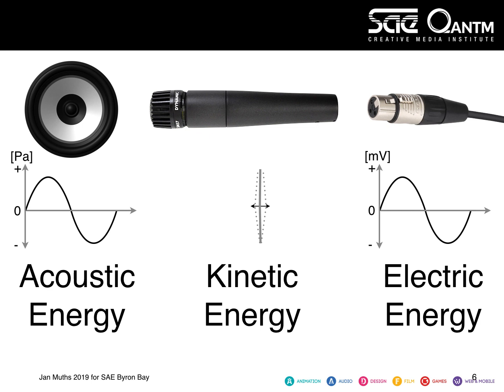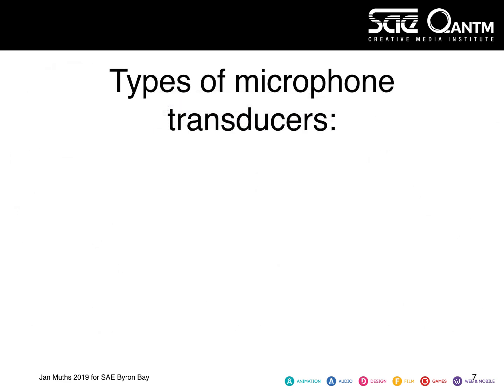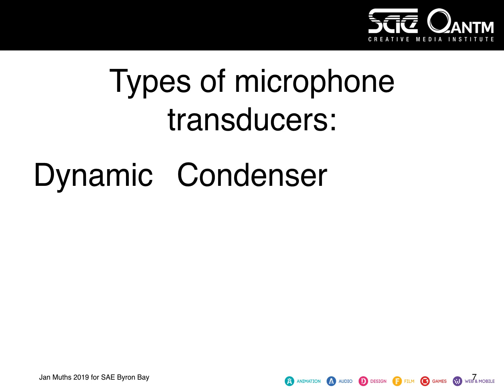The way a microphone turns kinetic energy into electric energy is given by the microphone type, and there are a couple of different categories — it's the transducer type. There are three categories of microphone transducers: the dynamic microphone, the condenser microphone, and just for the complete picture, let's also talk about other types.